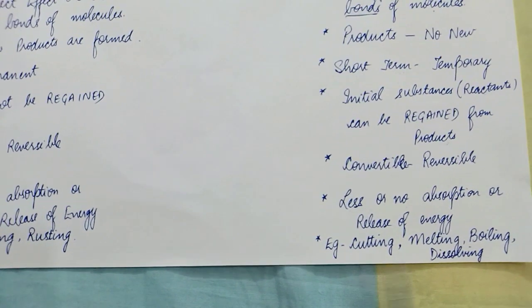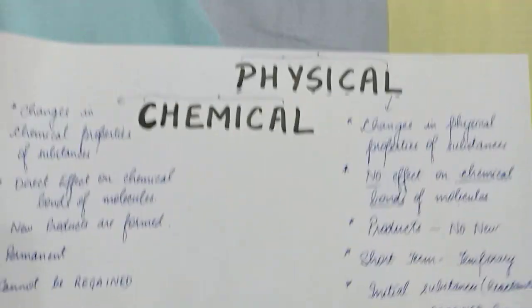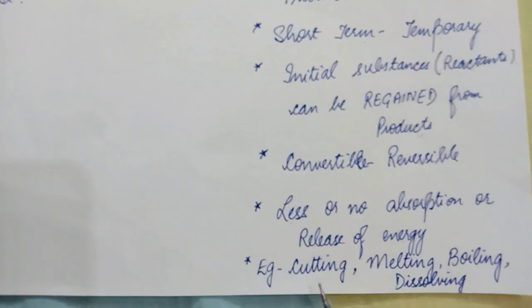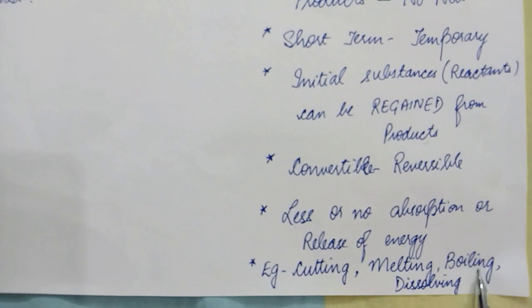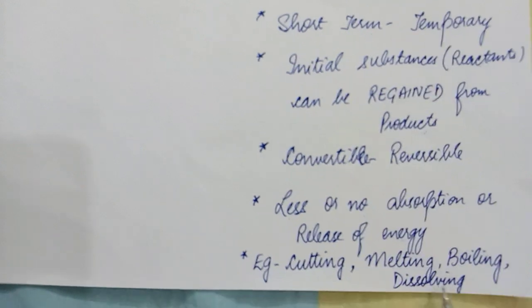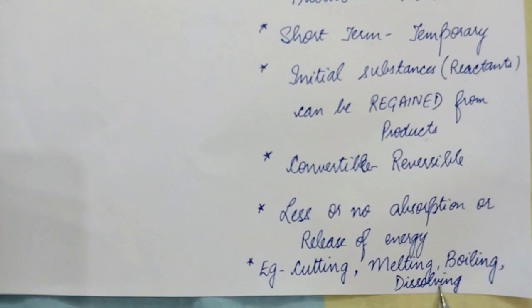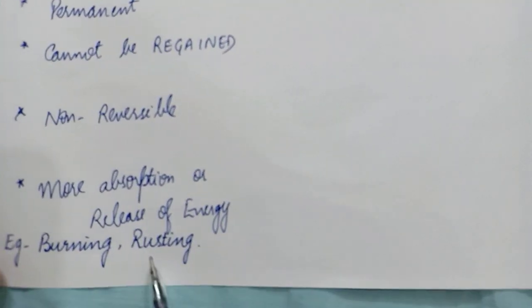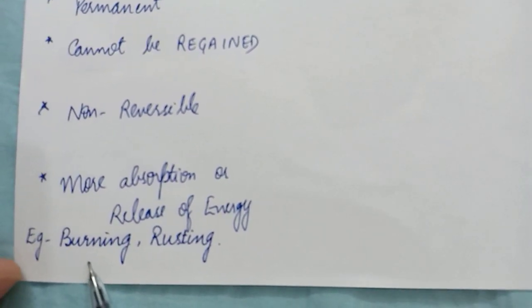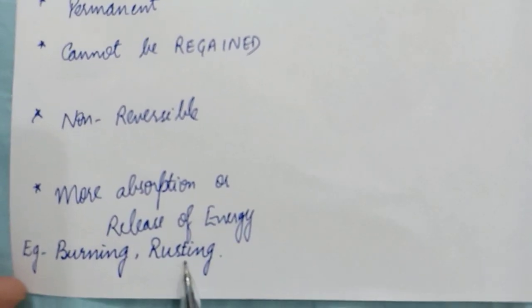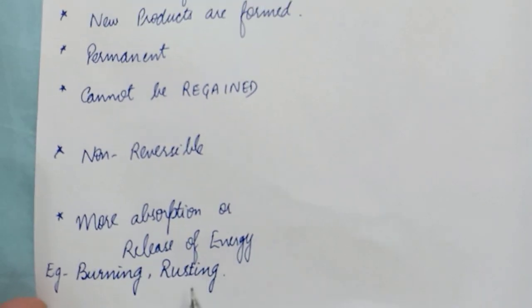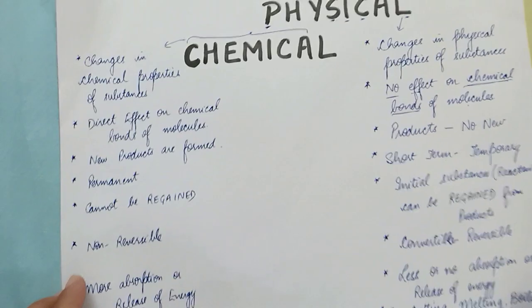The last difference is the examples. Physical changes include cutting — which changes the shape of the substance — melting, boiling (which changes the state of the substance), and dissolving (which also changes the state). So cutting, melting, boiling, and dissolving are physical changes. On the other hand, examples of chemical changes are burning and rusting, because they involve changes in chemical properties and always produce new products.